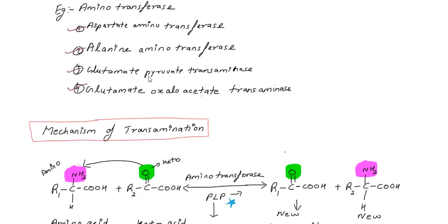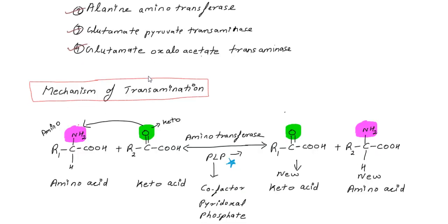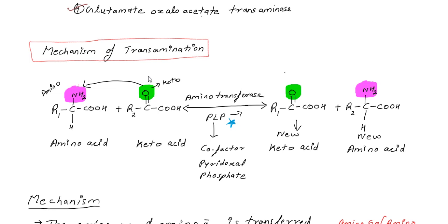We are going to study the mechanism of transamination. An amino acid has a COOH acid group and an NH₂ amino group attached to the alpha carbon. The basic difference between an amino acid and a keto acid is the presence of the enzyme aminotransferase, with cofactor PLP — pyridoxal phosphate.